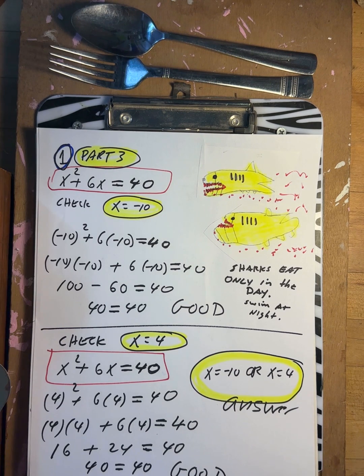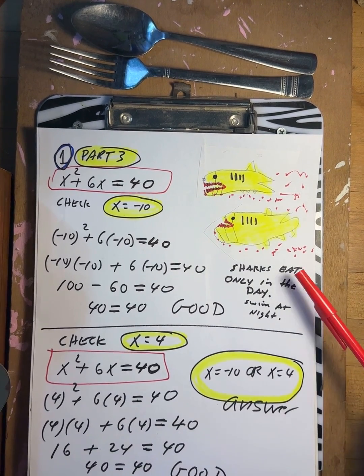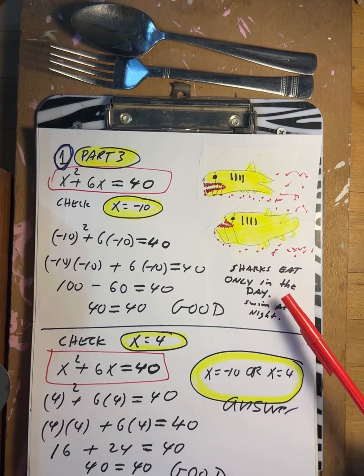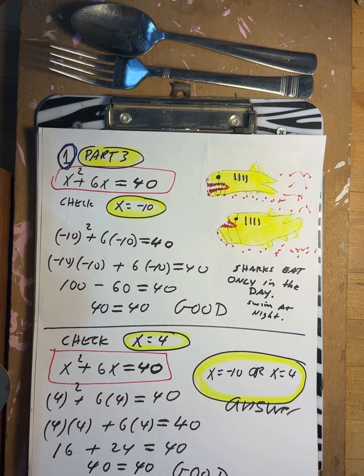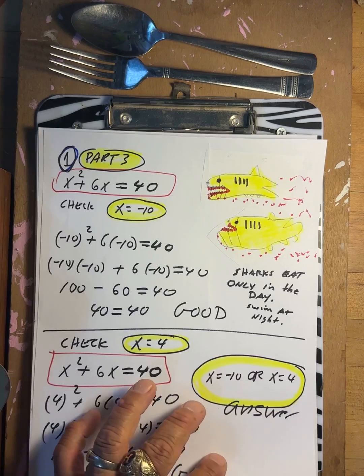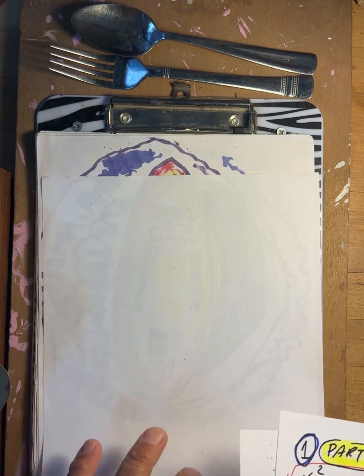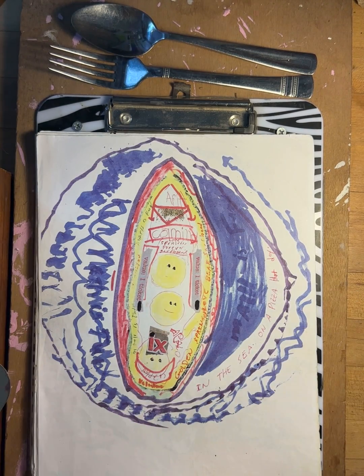Again, remember after you do all this studying, remember sharks eat only in the day so you can swim at night. It's okay, they're not going to eat you at night. But in the daytime, watch out. Okay? Anyway, done. After you do that, well, go to Mustang Island. Have fun out there in the surfboard.